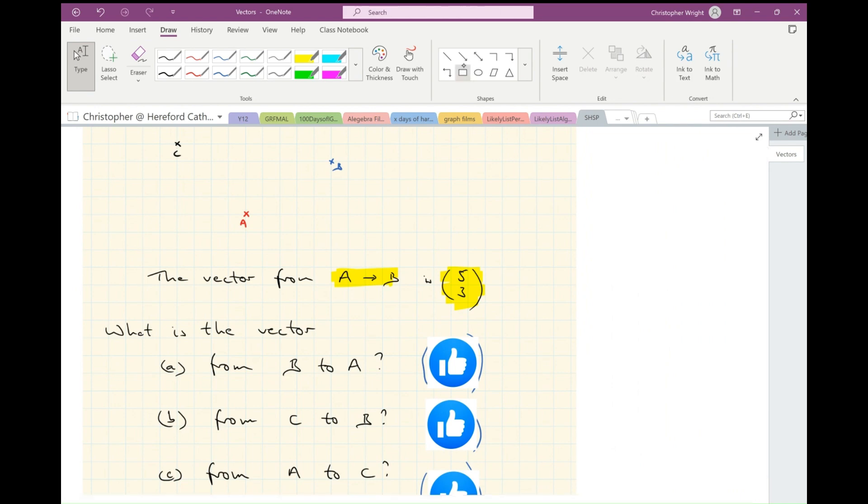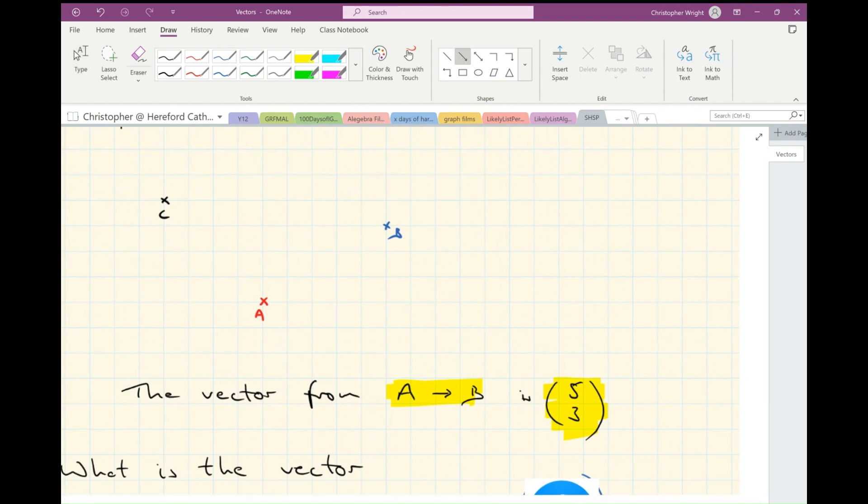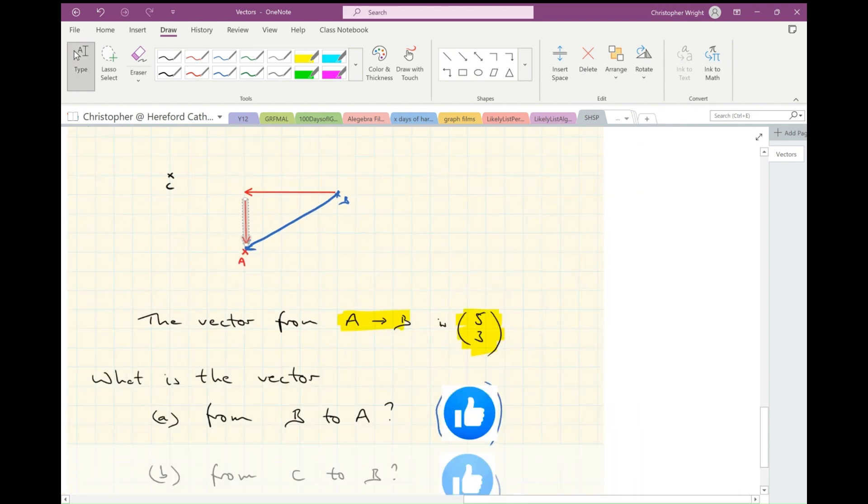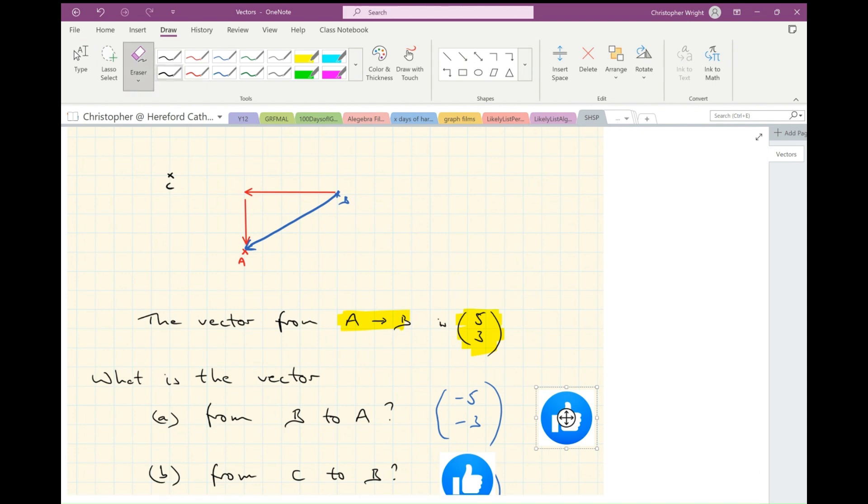The first is from B to A, so I'm going to draw my arrow from B to A. If I'm going from B to A, then I'm going horizontally in a negative direction - that's -5 - and then vertically -3. So my answer is (-5, -3). You perhaps knew that because it's simply the opposite of the vector from A to B, which we knew was (5, 3).